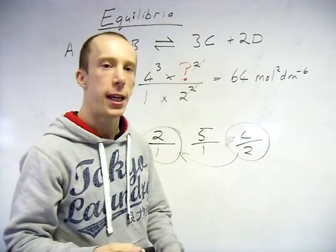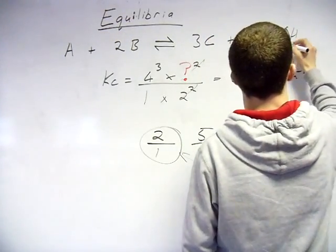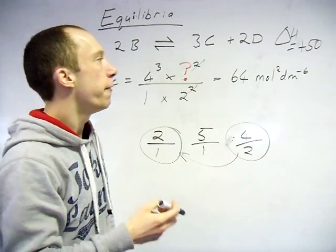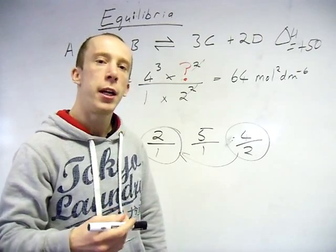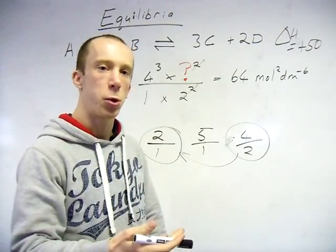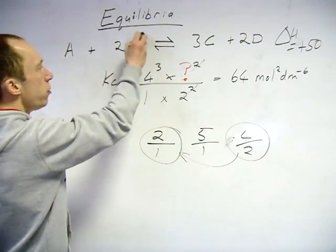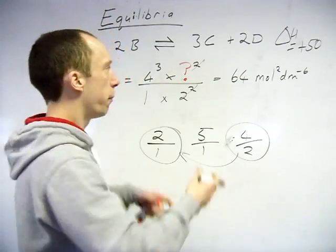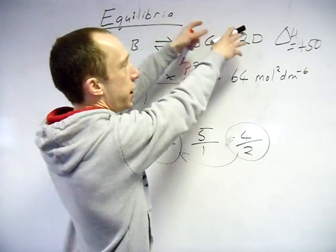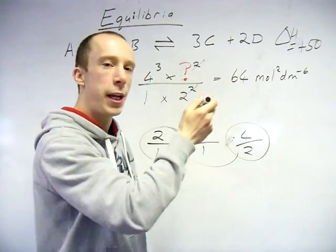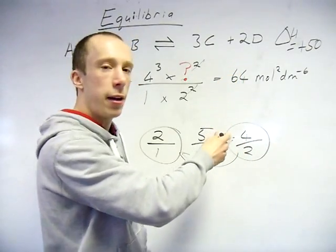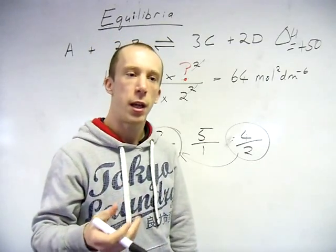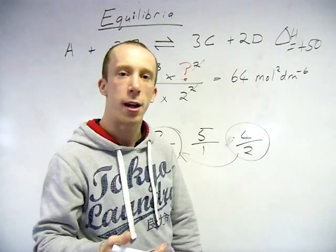The only thing which will affect Kc is temperature. If this is an endothermic reaction and I increase the temperature, the equilibrium moves in the endothermic direction as the system tries to cool itself down. So an increase in temperature uses up reactants and pushes towards products — it moves to the right. Your value of Kc changes because the ratio of products to reactants genuinely shifts. So temperature is the one that changes it; concentration and catalysts do not.